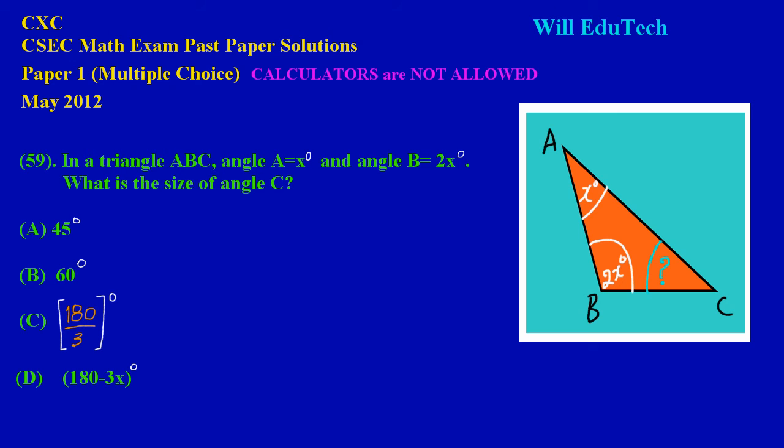Now, my friends, we would have learned in earlier lessons that the sum of the interior angles in any triangle sums to 180 degrees. For example, if I had a value for each of these angles and I added the angle at A to the angle at B to the angle at C, I must get a total of 180 degrees.